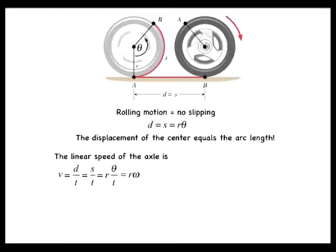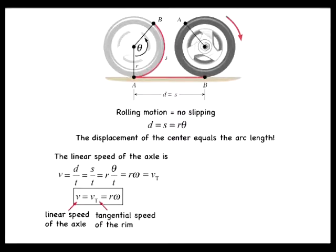But r omega equals the tangential speed vt, the linear speed of the outer edge of the tire. Therefore the linear speed of the axle is equal to the tangential speed of the outer edge of the tire.